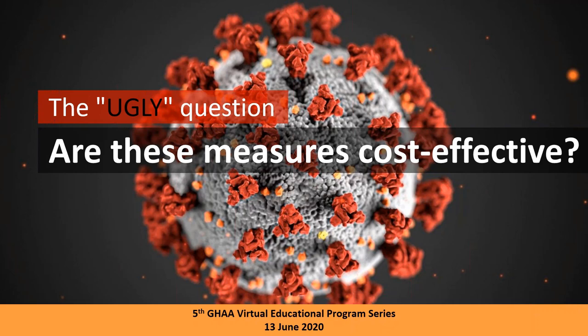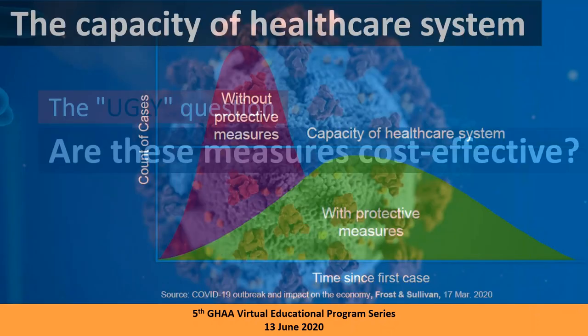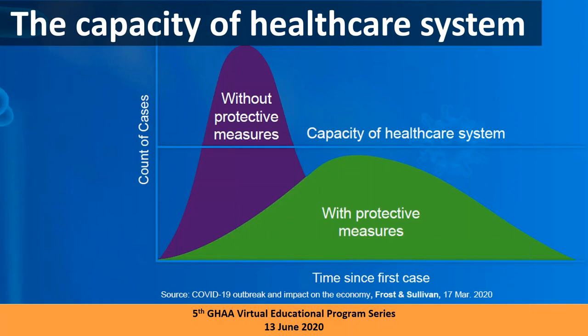What policy makers do when implementing any control measure is focus primarily on the capacity of the healthcare system. They do whatever they can to keep infected case numbers below a certain line — the point at which they can still provide appropriate care, with medical supplies and enough beds and ventilators. Once that number exceeds capacity, mortality rates rise. So they don't generalize the economic impact of these measures, and there's no cost-effectiveness discussion happening while they're being implemented.